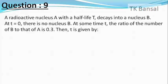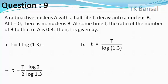The options are: small t equals capital T times log of 1.3; small t equals capital T divided by log of 1.3; small t equals capital T divided by 2 times log of 2 divided by log of 1.3; and small t equals capital T times log of 1.3 divided by log of 2.